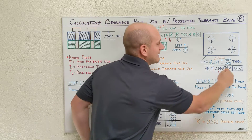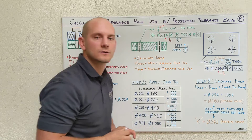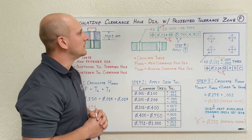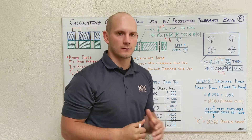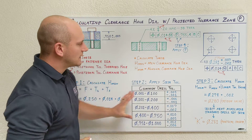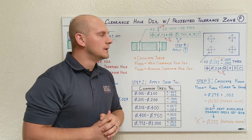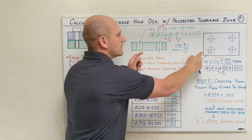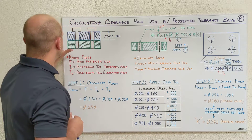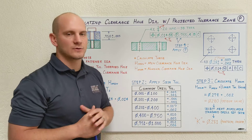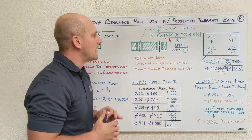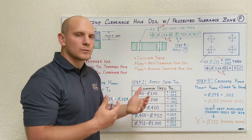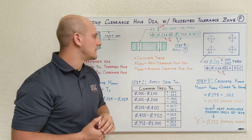We're finished compiling this clearance hole call-out. The last thing we absolutely must do is apply projected tolerance zone. If you follow this method and do not apply projected tolerance zone, you can no longer be 100% certain that your parts machined at worst case will assemble interference-free. I'll give you a quick rundown on how to do this, and cover projected tolerance zone more in-depth in a future video.